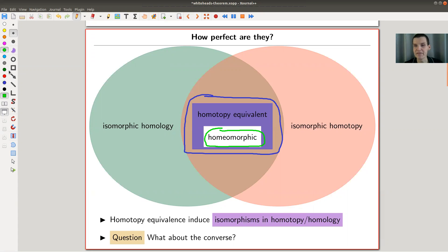So you can have spaces with isomorphic homotopy groups. This is my red bubble. You can have spaces with isomorphic homology. That's my green bubble. You can have any type of overlap. And isomorphic homology might or might not tell you whether spaces are homotopy equivalent and whatnot. So you can kind of have everything. So for each part here in this little Venn diagram.